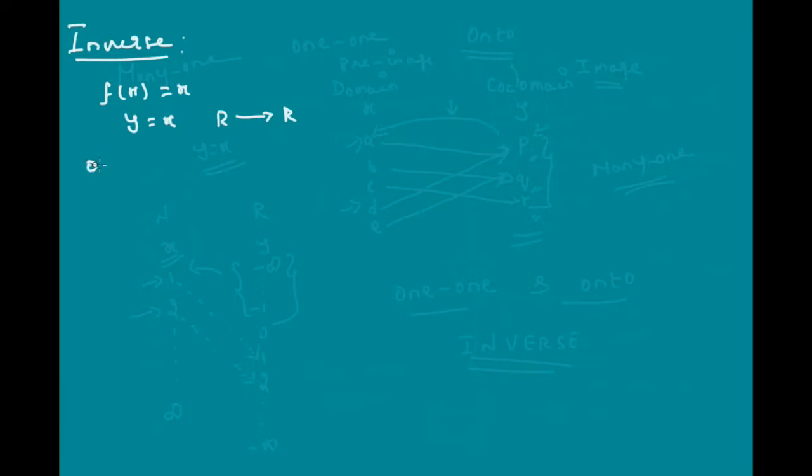This is one-to-one because for all x, I will have one value of y and unique value of y. If x equal to minus 1, y will be equal to minus 1. If x equal to plus 1, y will be equal to plus 1. So, there is unique value for every x in the domain.